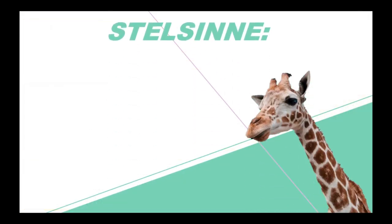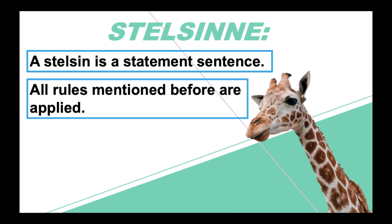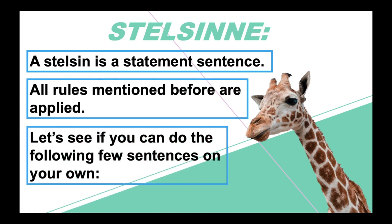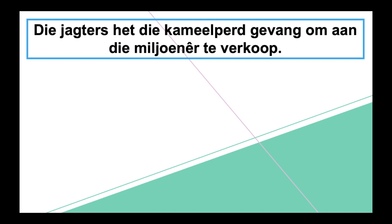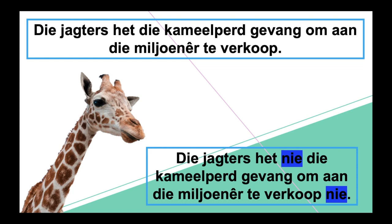Now we're going to start with stelsene — a statement sentence. It's just a basic sentence making a statement. All rules mentioned before are applied here. Let's see if you can do the following sentences on your own. I'm going to show you the sentence and as soon as you see the giraffe on screen, the answer is going to appear. So if you haven't done it on your own yet, just pause the video. 'Die jagter het die kameelpaard gevang om aan die miljonêr te verkoop.' And your answer would be: 'Die jagter het nie die kameelpaard gevang om aan die miljonêr te verkoop nie.'